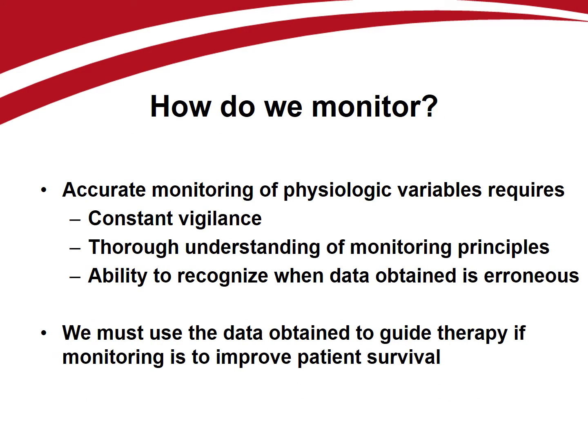As discussed in the previous podcast, accurate measurement of physiologic variables requires constant vigilance, a thorough understanding of the monitoring principles and pitfalls involved, and the ability to recognize when the hemodynamic data obtained is erroneous. Only then can appropriate application of the information gained lead to therapy that improves patient outcome. Inserting a plastic catheter into a patient doesn't make them better — it is interpreting the data we obtain from the catheter and instituting appropriate therapy that increases their survival.